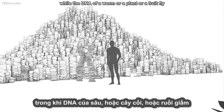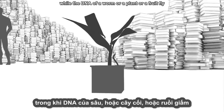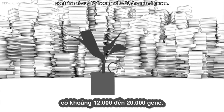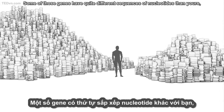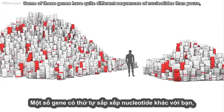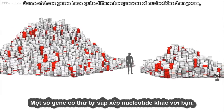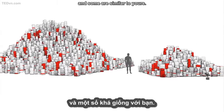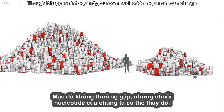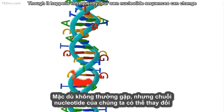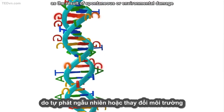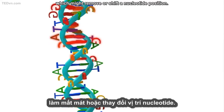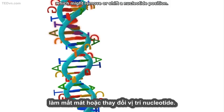while the DNA of a worm or a plant or a fruit fly contains about 12,000 to 20,000 genes. Some of those genes have quite different sequences of nucleotides than yours, and some are similar to yours. Though it happens infrequently, our own nucleotide sequences can change as the result of spontaneous or environmental damage, which might remove or shift a nucleotide position.